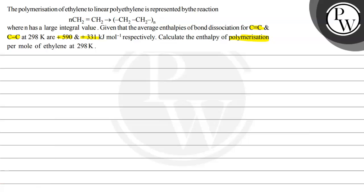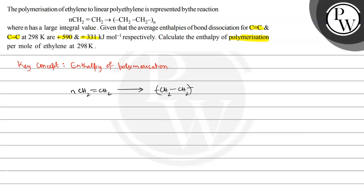The key concept here is enthalpy of polymerization. We have ethylene CH2=CH2, and N moles of ethylene — N molecules of ethylene — when we combine them they form a polymer like this: CH2-CH2, and this chain continues. So we have to calculate the enthalpy change for this reaction, which is the polymerization enthalpy.